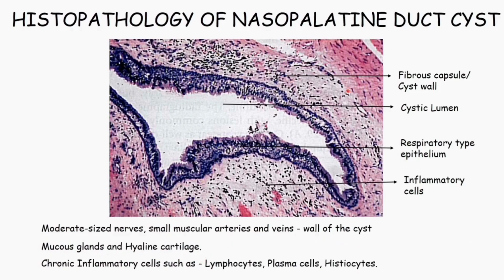The cyst wall is also called the fibrous capsule, and its components are helpful in diagnosis. Because the nasopalatine duct cyst is within the incisive canal, moderate-sized nerves and small muscular arteries and veins are usually found on the walls of the cyst. Small mucous glands and hyaline cartilages have also been reported. Chronic inflammation causes the presence of lymphocytes, plasma cells, and histiocytes.